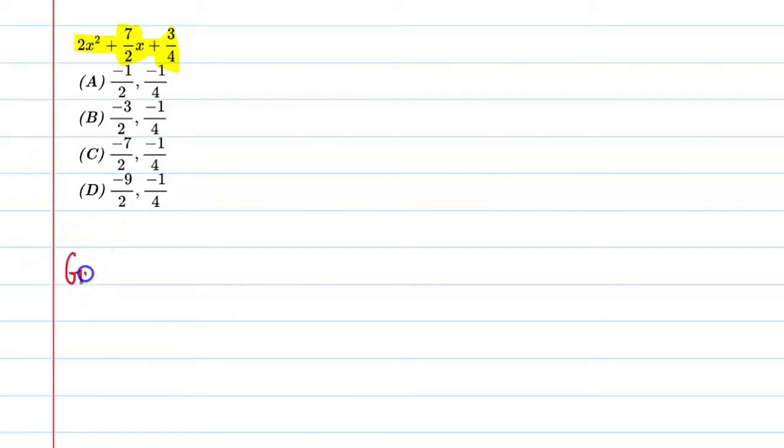First of all we will write the given: 2x square plus 7 by 2x plus 3 by 4. We will solve it by splitting the middle term method.